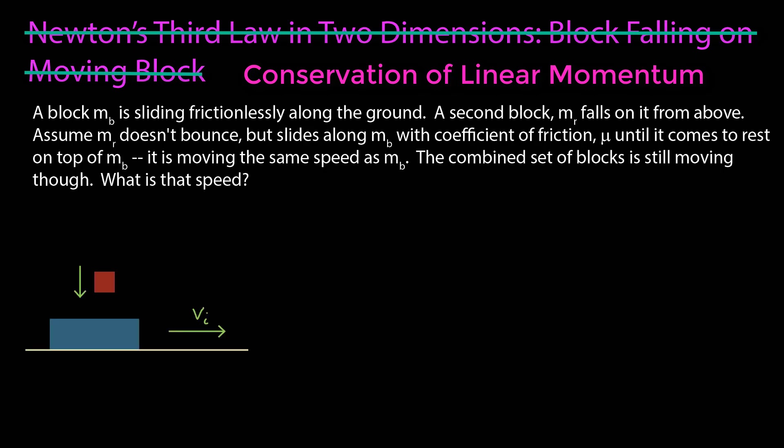So I have a block, which I will call blue, with mass m sub b, that is sliding frictionlessly along the ground with a speed of v sub i. There's a second block, which I will call red, which falls on it from above.